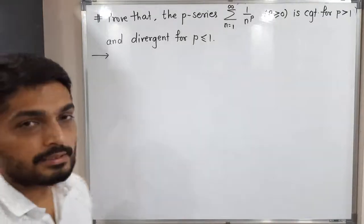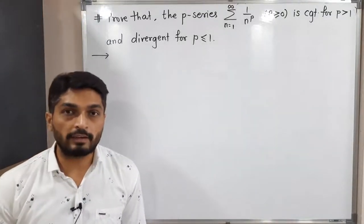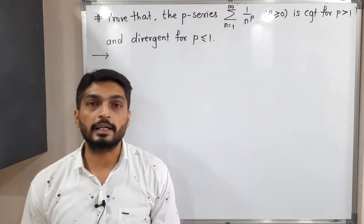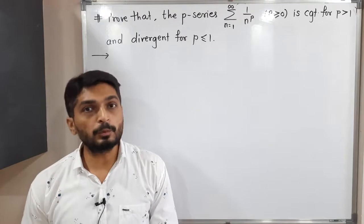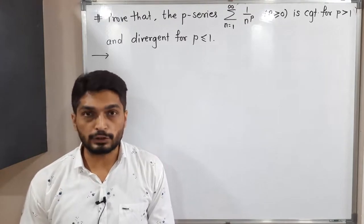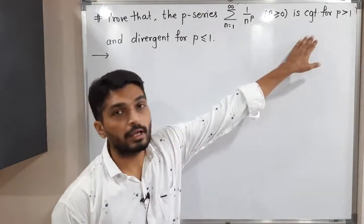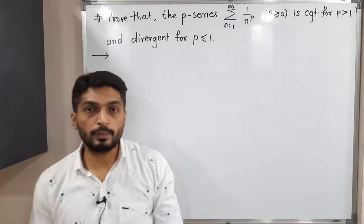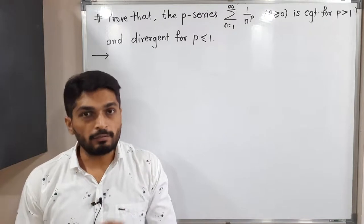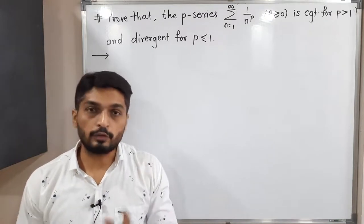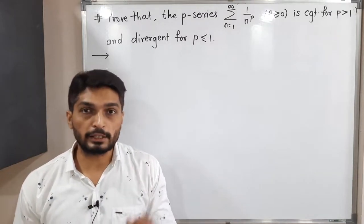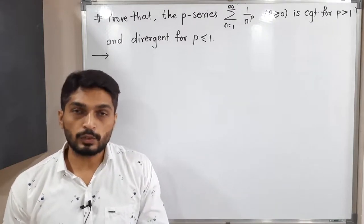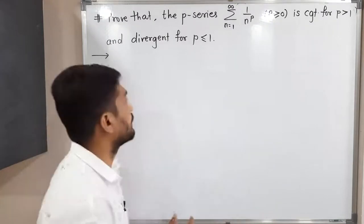Let us discuss this result. We have a p-series: summation of 1 upon n to the p, where p is greater than or equal to 0. We have to prove that the p-series is convergent for p greater than 1, and divergent for p less than or equal to 1. We will discuss three cases: p equal to 1, p less than 1, and p greater than 1.